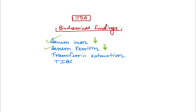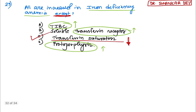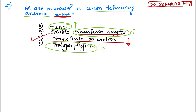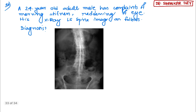Transferrin saturation is also reduced in iron deficiency anemia, while TIBC, soluble transferrin receptor, and protoporphyrin all increase. So transferrin saturation is the answer — it is decreased in iron deficiency anemia.